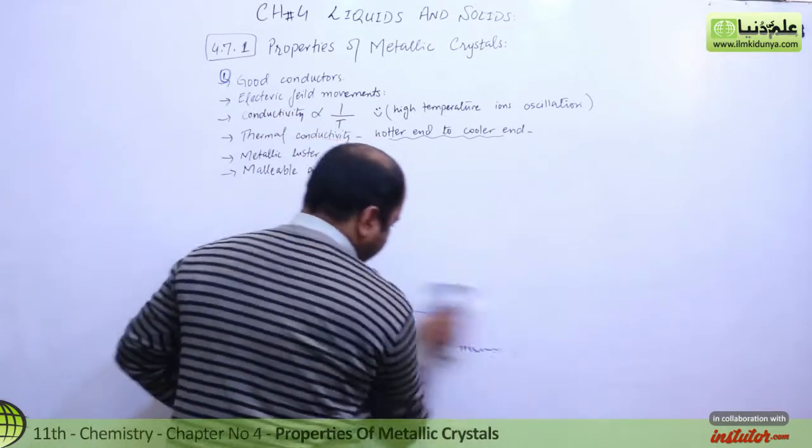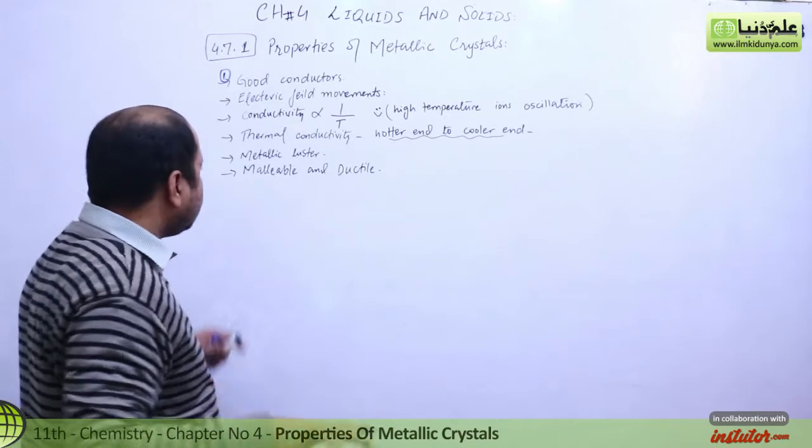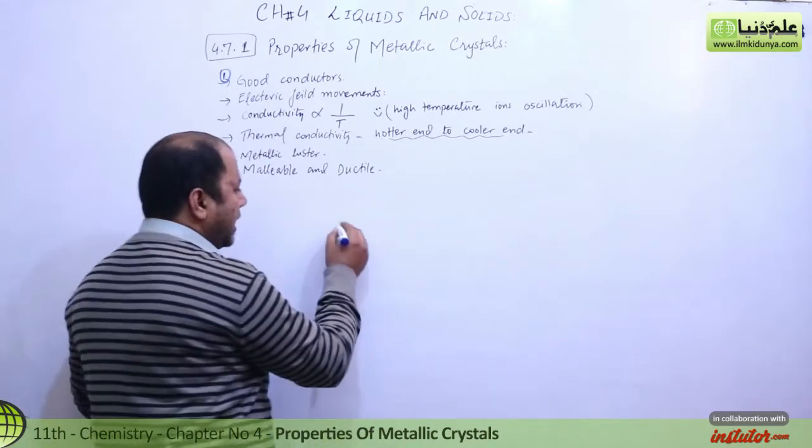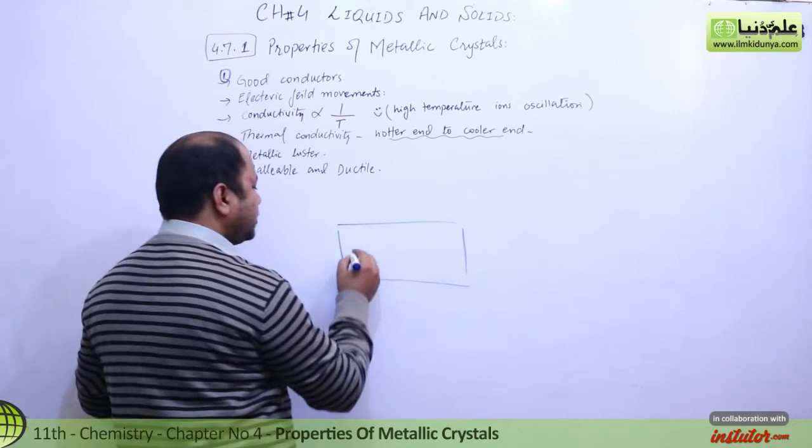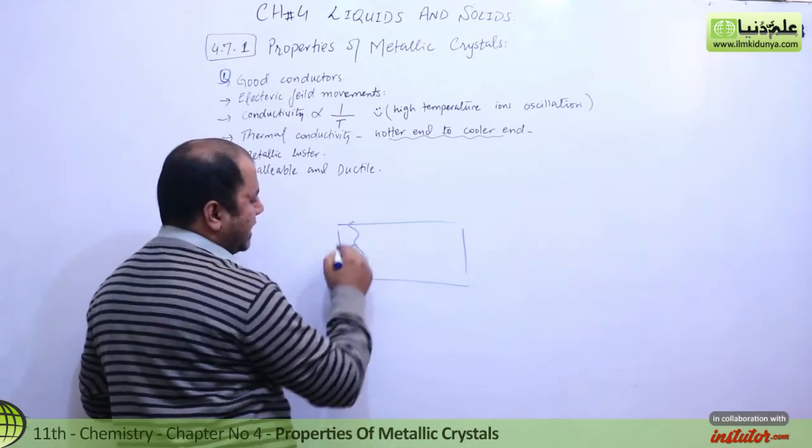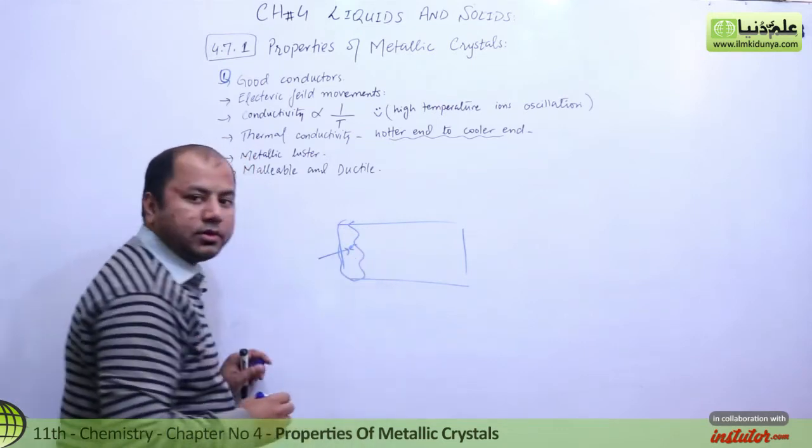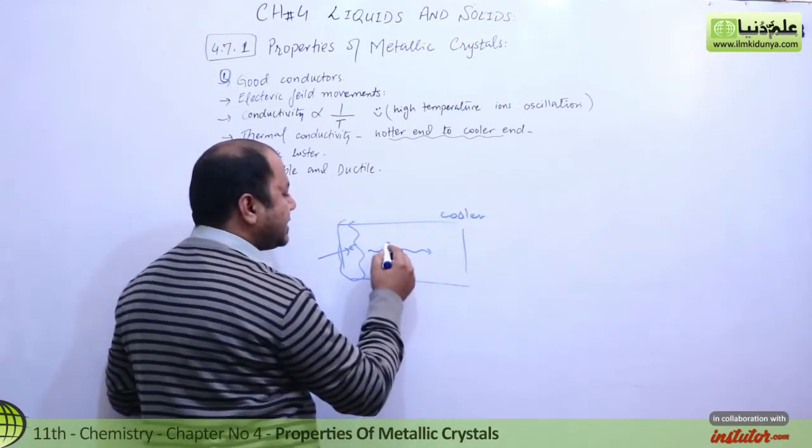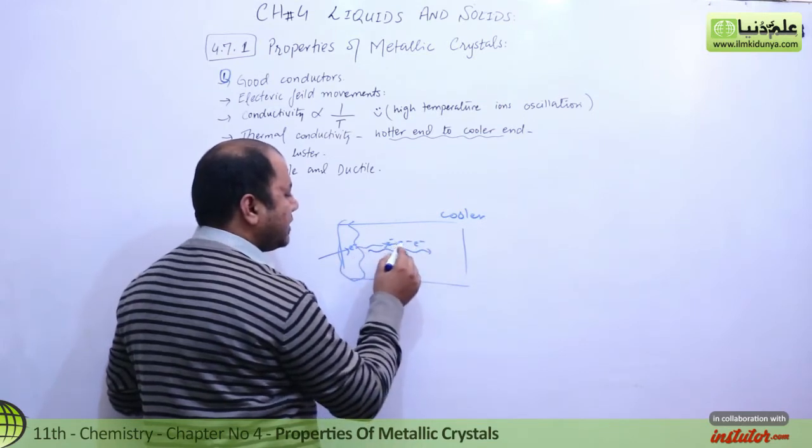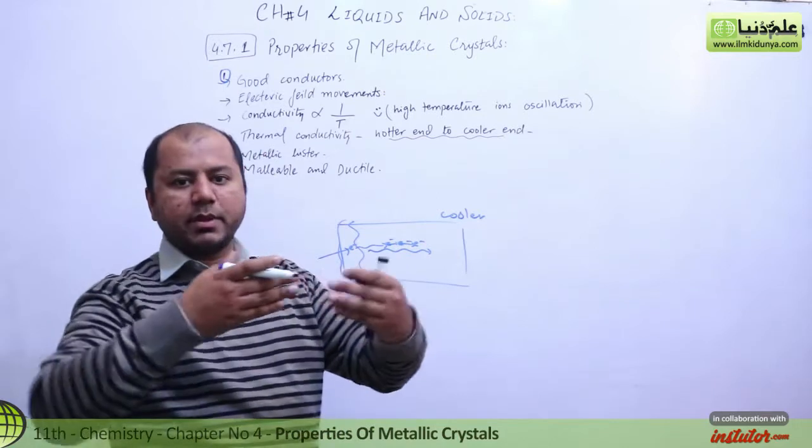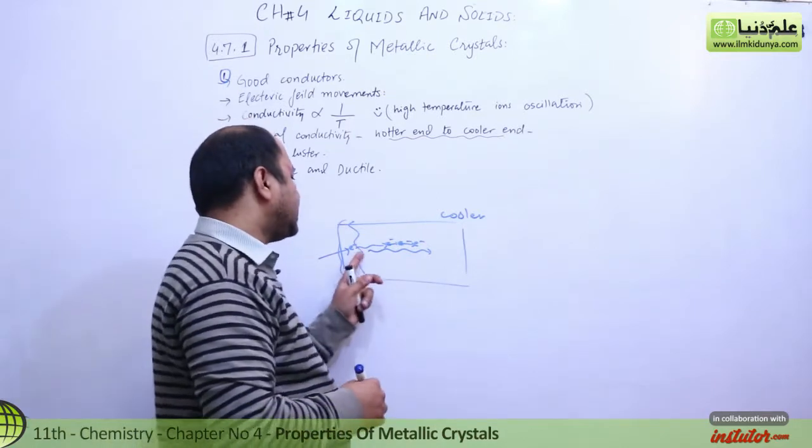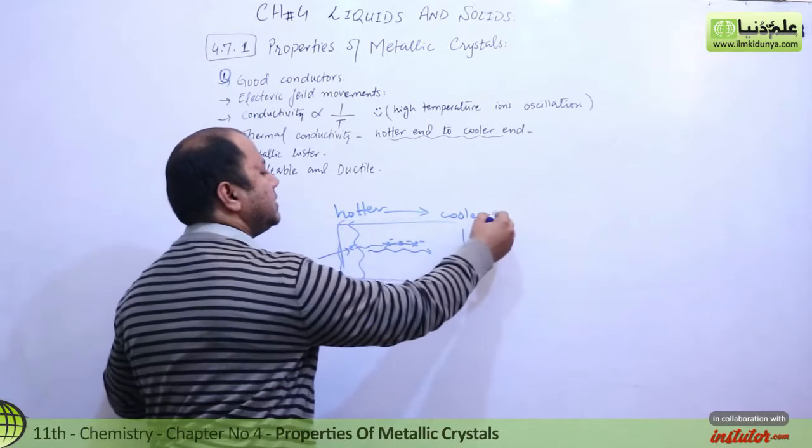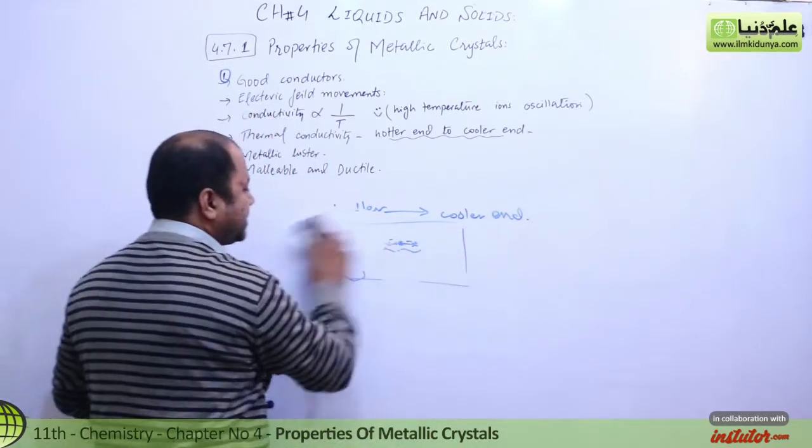Now let's talk about thermal conductivity. If we have a metallic sheet and heat one end, the electron gains energy and starts traveling towards the cooler part. Along the way, it transfers energy to other electrons through collisions. This is how thermal conductivity occurs from the hotter end towards the cooler end.